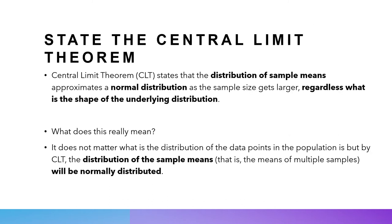Now let's go back and reread what central limits theorem says. It states that the distribution of the sample means will be approximately normal if the sample size is large, regardless of the underlying distribution. In other words, I do not care what the actual distribution of the data points in the population is — the distribution of the sample means will be normally distributed. The means of multiple samples will be normally distributed, and everything falls back into normal distribution. That is what makes central limits theorem so powerful.